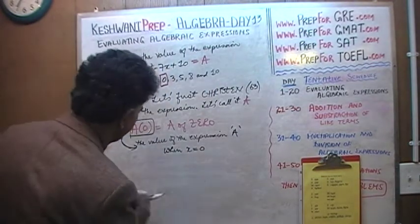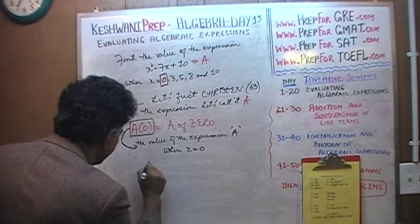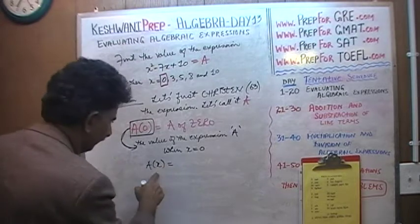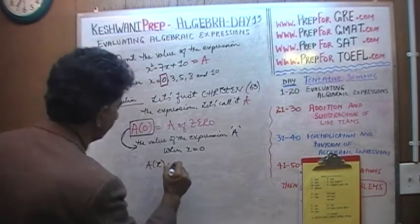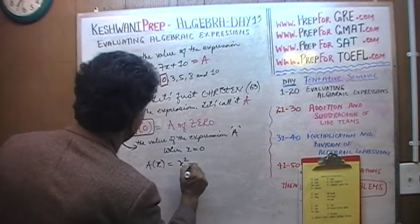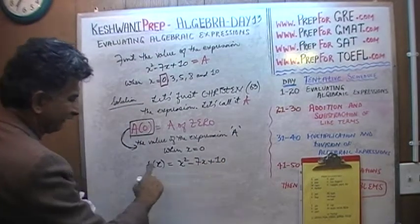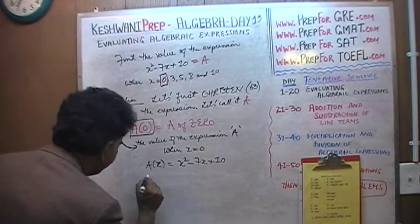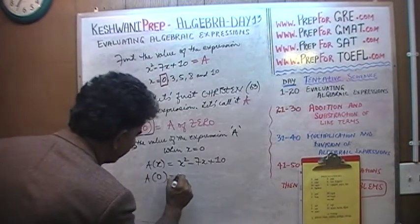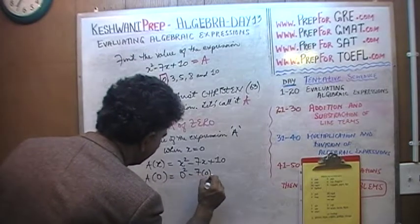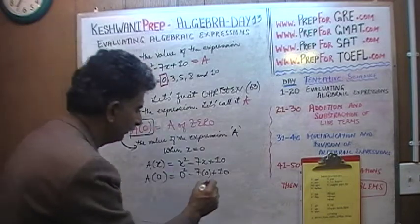Our expression is called A of x — we write it A(x) — because it's expressed in x. Now we find A(0): we replace x with 0. So x squared becomes 0 squared, minus 7 times 0, plus 10. Of course 0 squared is 0, and 7 times 0 is 0, so A(0) equals 10.